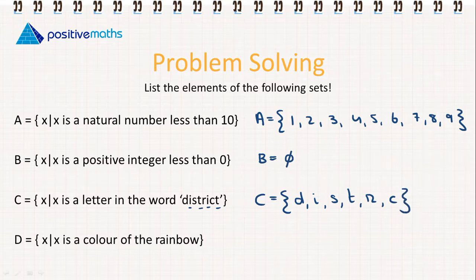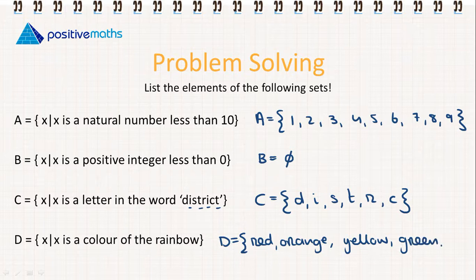And our last example, D is equal to x, where x is a colour of the rainbow. So D is going to be equal to red, orange, yellow, green, blue, indigo, and violet.